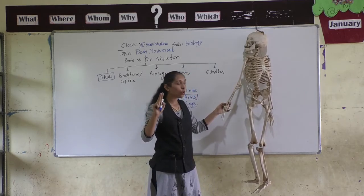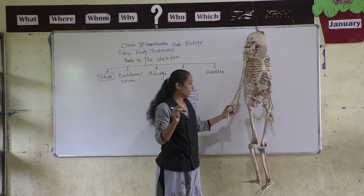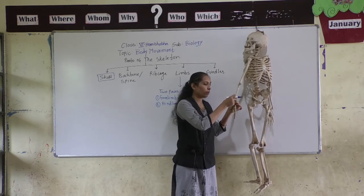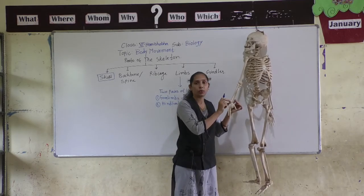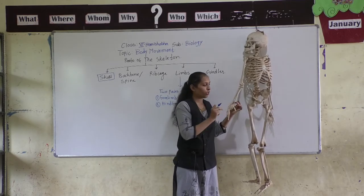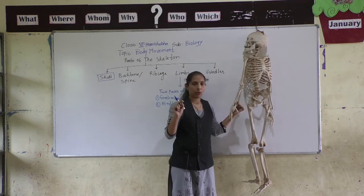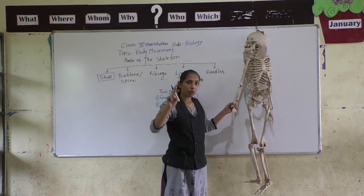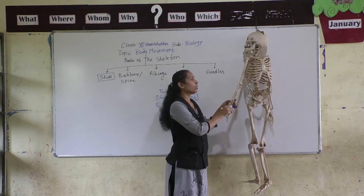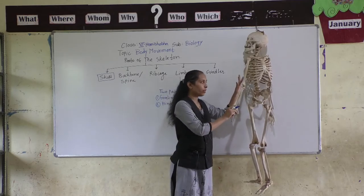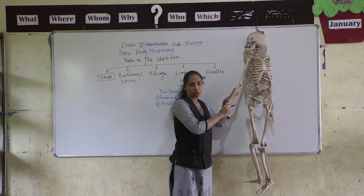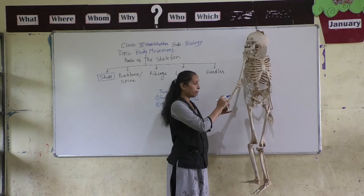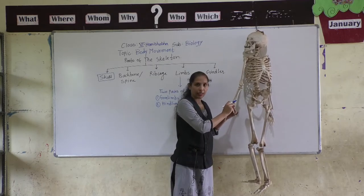The lower portion of the arm is formed by two bones — the bigger one is called Tibia and the smaller one is called Ulna. So the upper part has one bone, Humerus, while the lower portion has two bones, Tibia and Ulna.